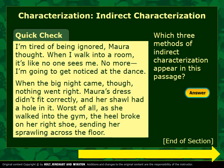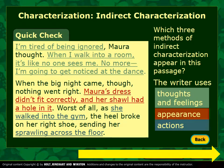Let's try again. Which three methods of indirect characterization appear in this passage? 'I'm tired of being ignored,' Maura thought. 'When I walk into a room, it's like no one sees me. No more. I'm going to get noticed at this dance.' When the big night came, though, nothing went right. Maura's dress didn't fit correctly and her shawl had a hole in it. Worst of all, as she walked into the gym, the heel broke on her right shoe, sending her sprawling across the floor. The three methods here are: thoughts and feelings, characterization through appearance, and characterization through actions. Pause if you need to process this screen, then move on.